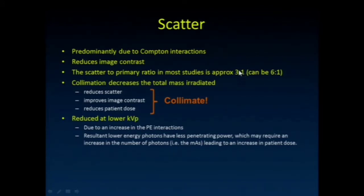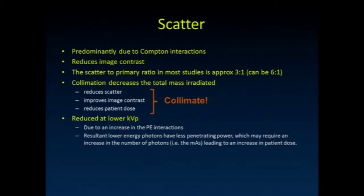The scatter-to-primary ratio is the number of detected x-rays that were scattered versus ones that were unscattered. That ratio can be three to one—three times as many scattered as opposed to unscattered—or even six to one in lateral abdominal or lateral lumbar spine imaging.